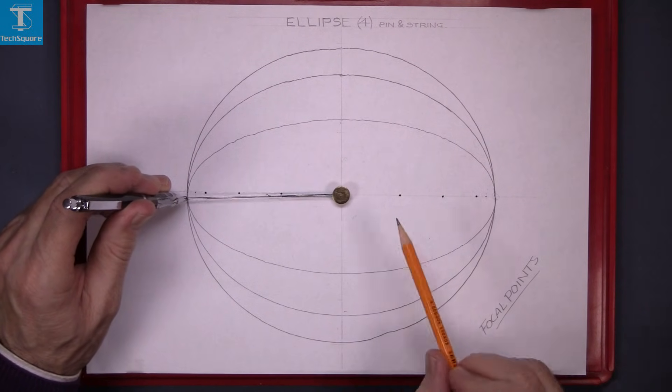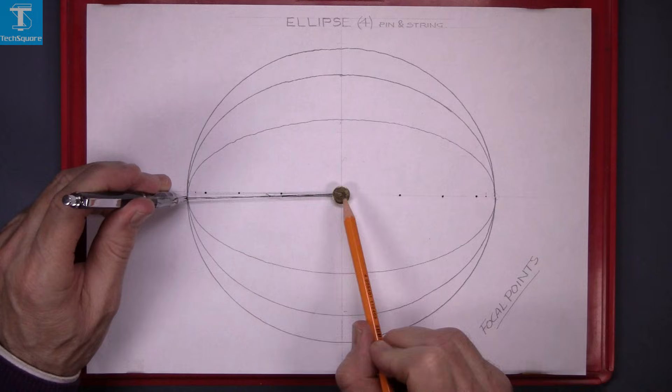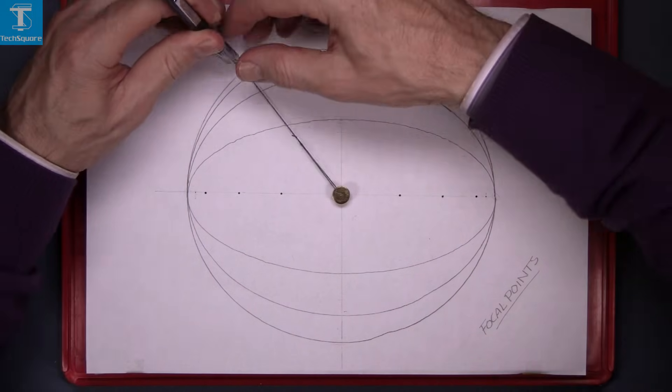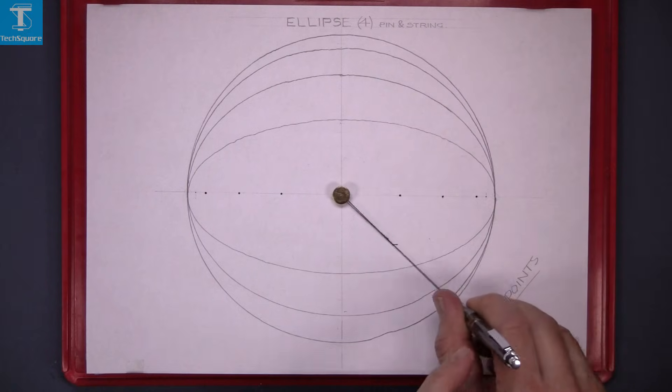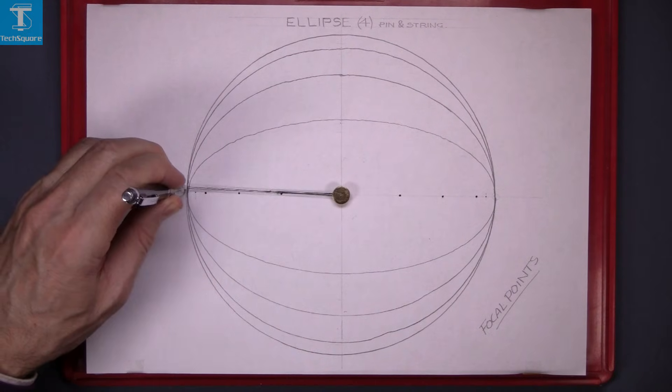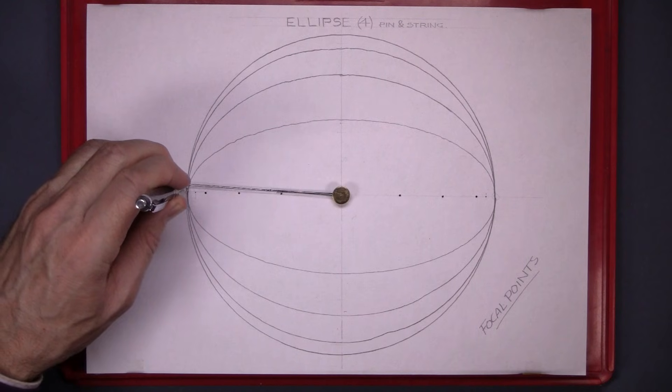Now I've just used one pin, so I should get a circle now. The string is attached just to one pin in the centre, and just draw the curve around. And that's a circle. That's ellipse 4 exercise complete.